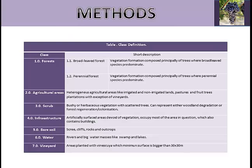The classes developed in this study are broadleaf forest, perennial forest, agriculture, scrub, infrastructure, bare soil, water, and vineyard — which are areas planted by vine whose minimum surface is bigger than 30 by 30 meters, because that is the limit of the spatial resolution of the TM sensor.